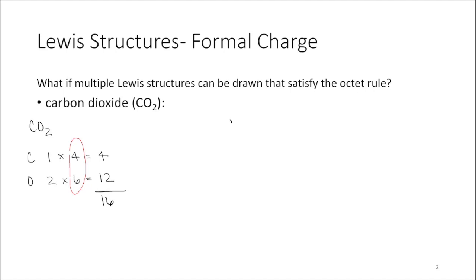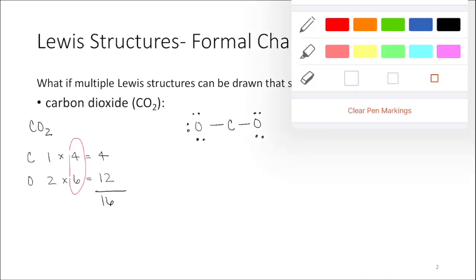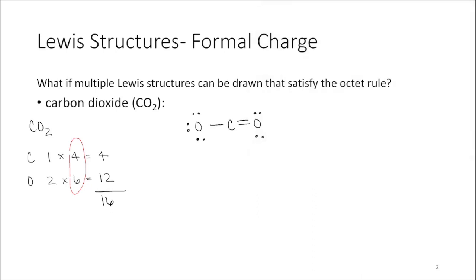I would start drawing this Lewis structure with carbon in the middle bonded to each of two oxygens. I've used two electrons in each bond — four total — and then I'll start filling in the octets of my atoms, leaving the central atom for last. I'm going to put another six electrons around each oxygen, and you can see that I've used all 16 valence electrons, but carbon doesn't have an octet of electrons. So we need to make some multiple bonds, and I'll start by moving a pair of electrons from this oxygen into the middle, and you can see carbon is coming closer to having an octet.